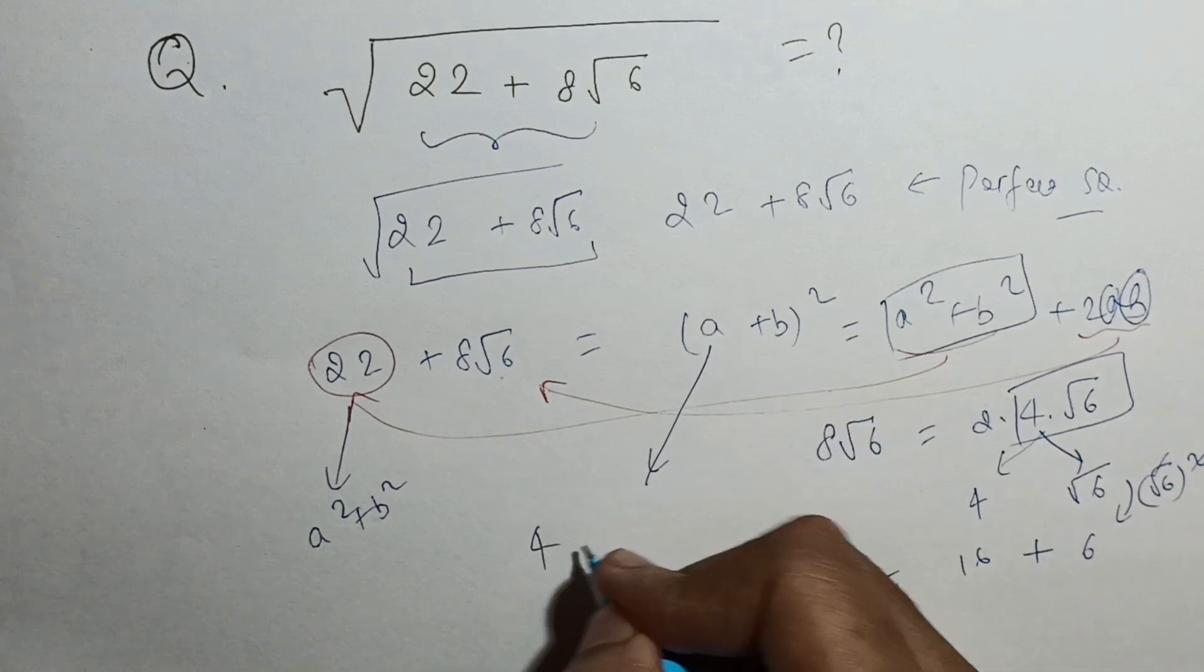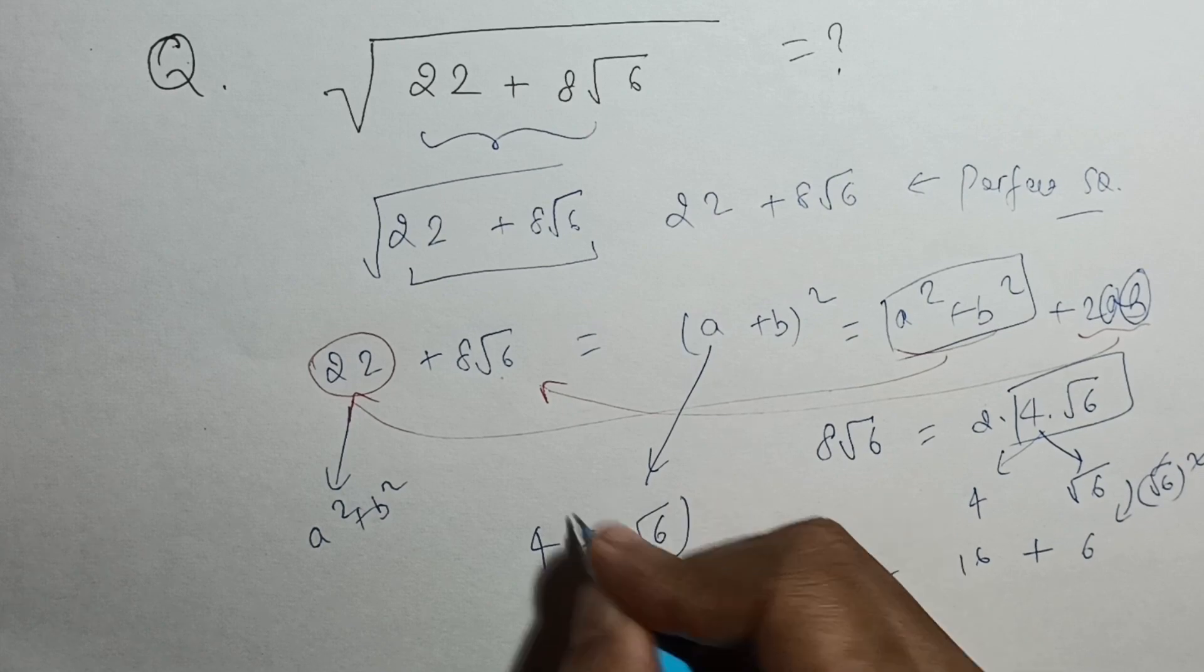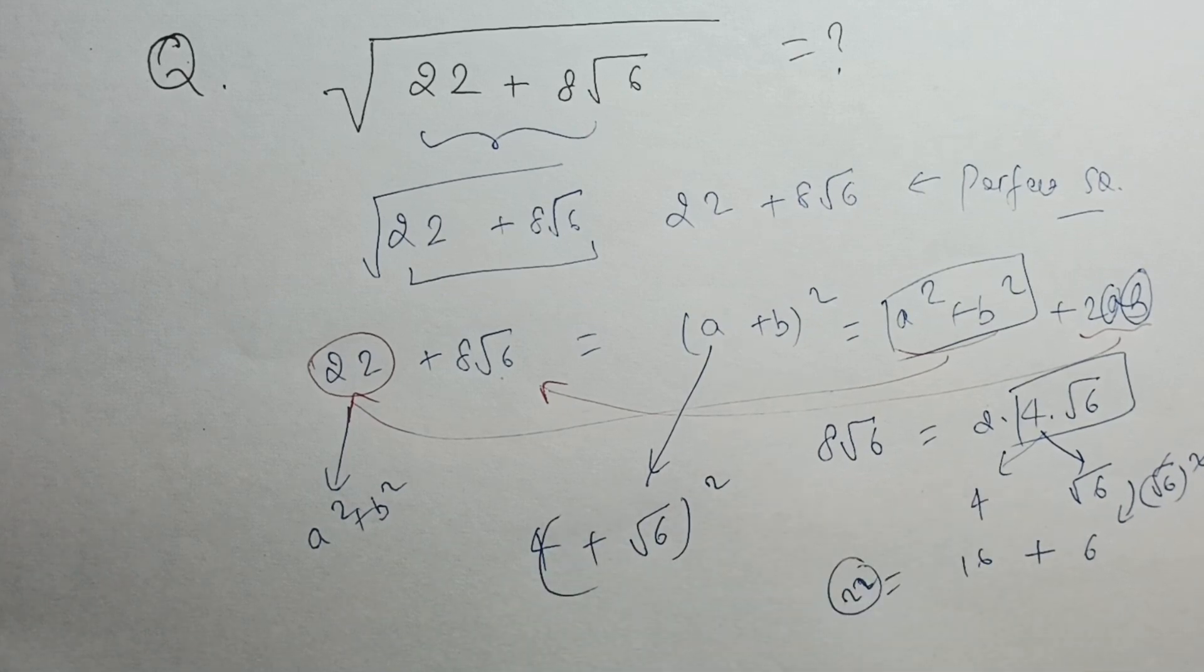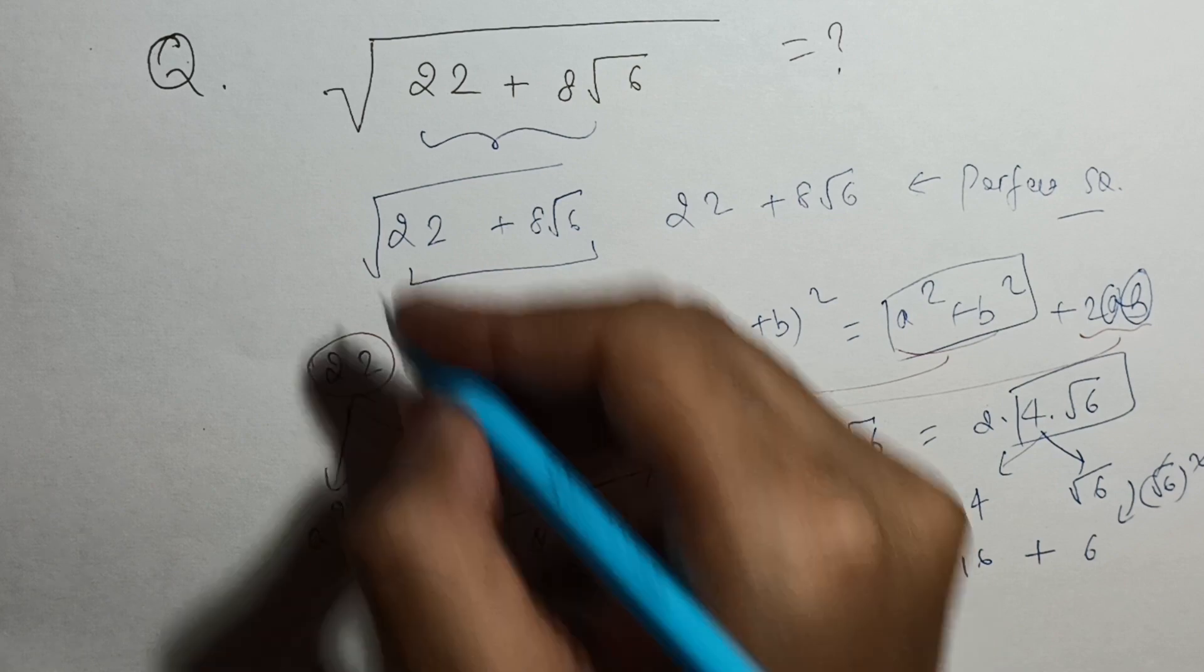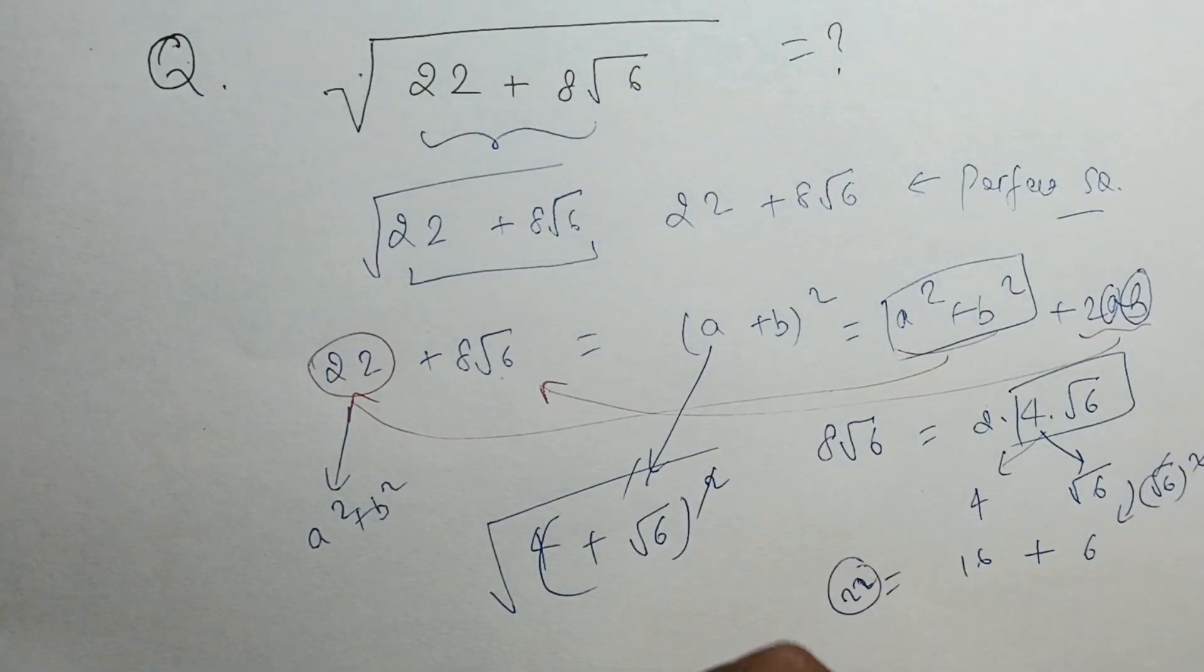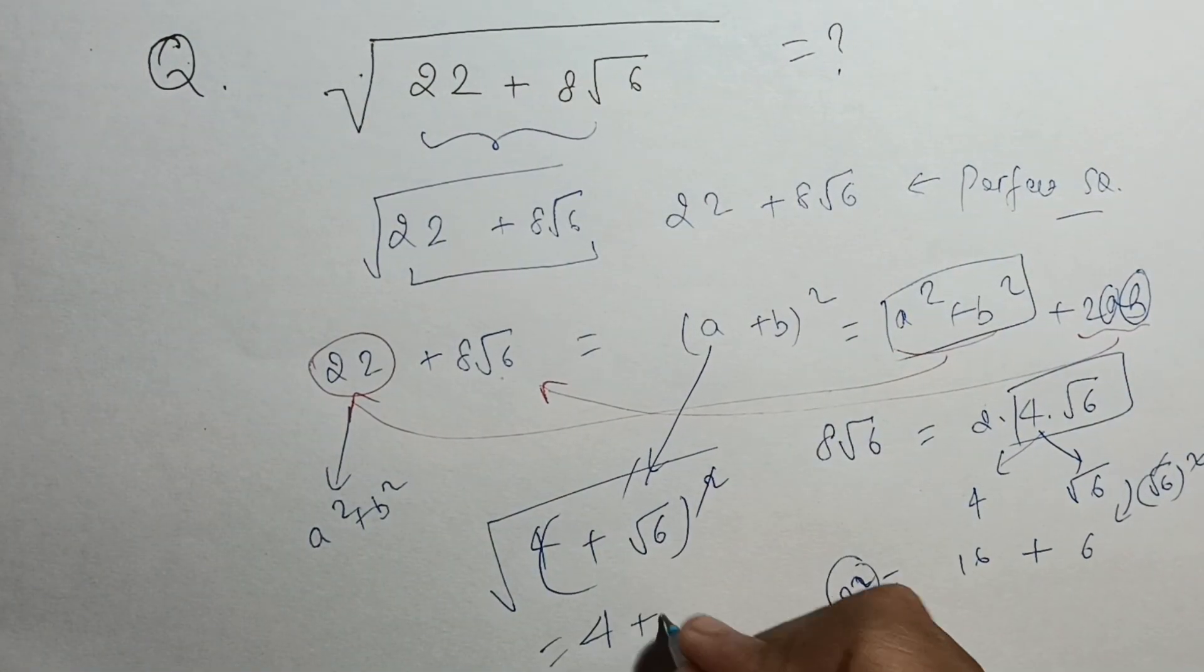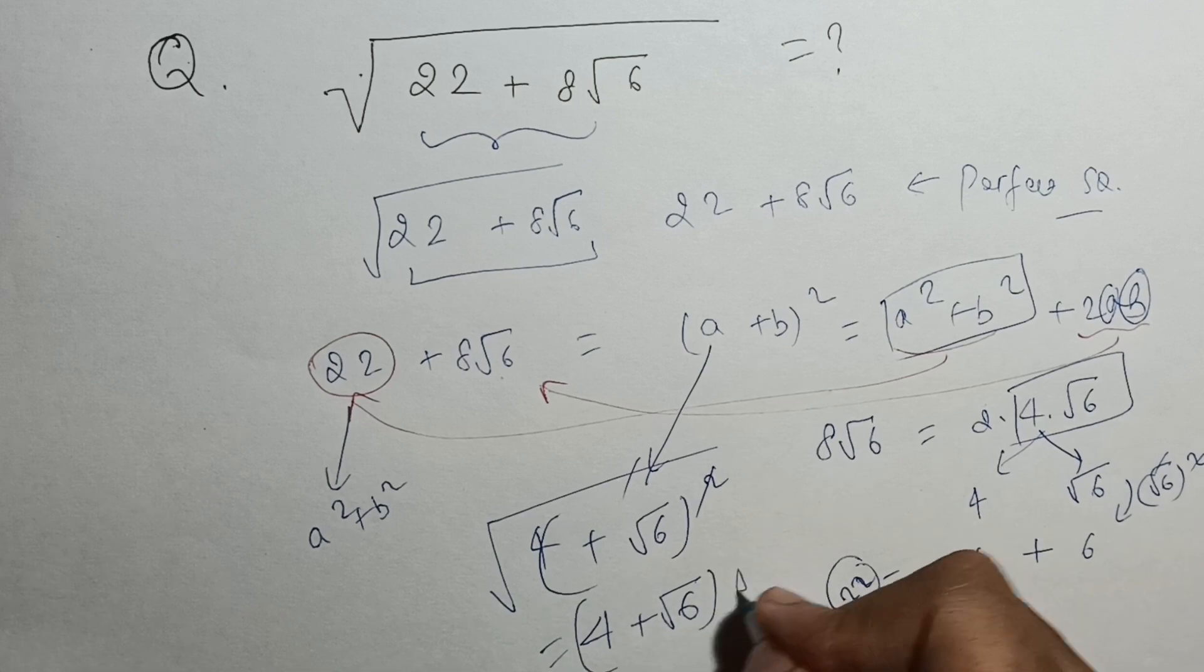So a will be 4, b will be root 6. 4 plus root 6 whole square, and if I put a square root sign over this, this sign will be cancelled out. So from here I will get 4 plus root 6 as our answer.